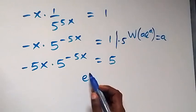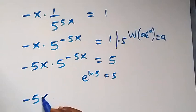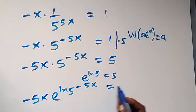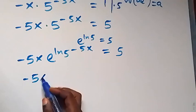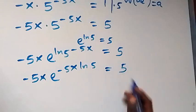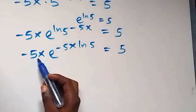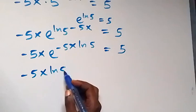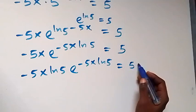Then from here, 5 can be written as e^(ln 5). So this becomes minus 5x times e^(ln 5) raised to power minus 5x, now equals to 5. The power comes to the back: minus 5x times e^(minus 5x ln 5) now equals to 5. Then multiplying both sides by ln 5 gives minus 5x ln 5 times e^(minus 5x ln 5) equals 5 ln 5.